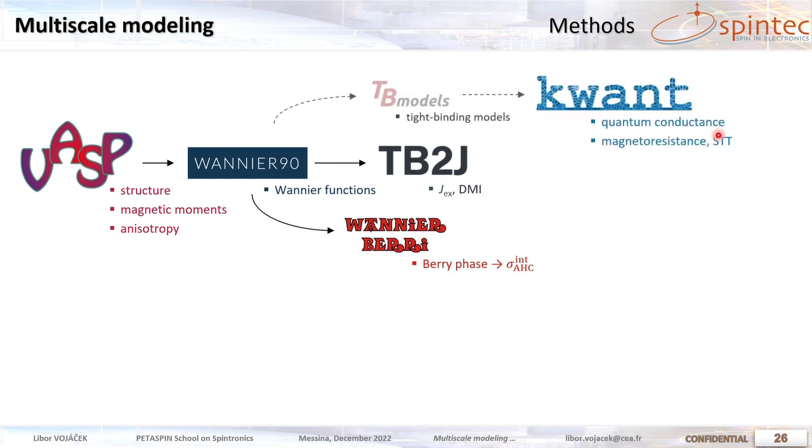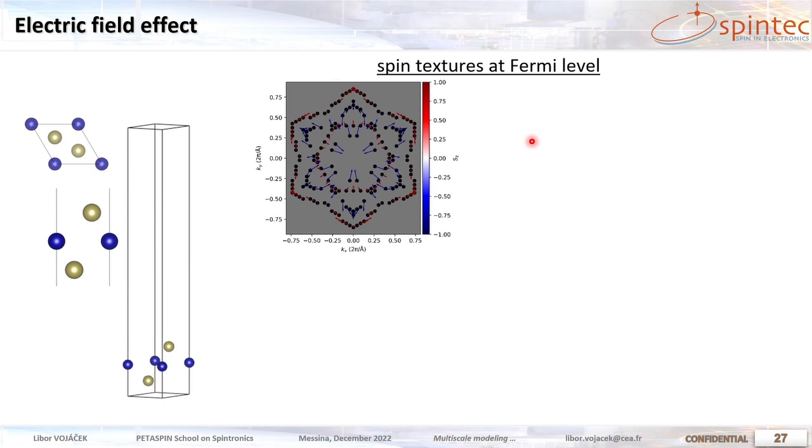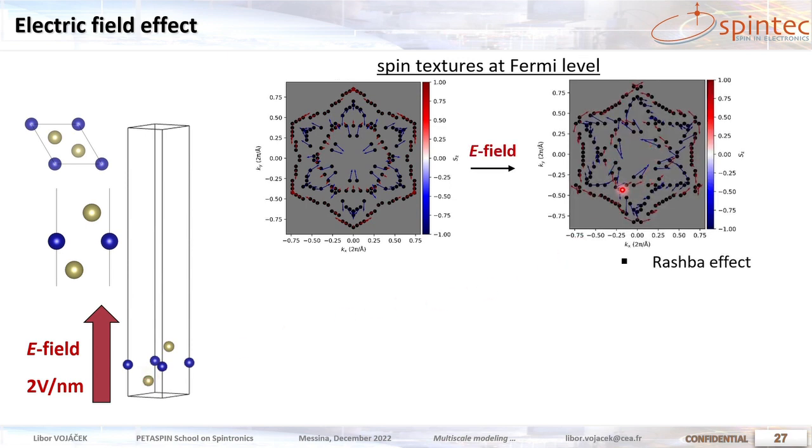And the last thing that we can do with the Wannier functions is to build the tight binding models. So here I show only a simple chromium ditelluride layer in vacuum. And here this is the cut at Fermi energy in the reciprocal space. And the arrows are the spin components in X and Y. And the color is the out of plane spin component. So you can see some centrosymmetric Dresselhaus-like spin orbit coupling. And then we apply electric field and we break the inversion symmetry. And we see a very nice circulation appearing, which is a signature of the Rashba effect, which is important for inducing spin current.